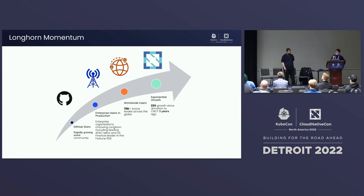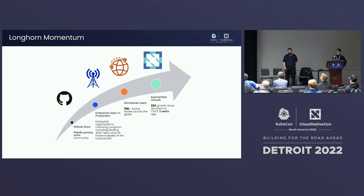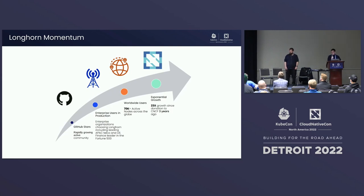Talking about community and momentum for Longhorn - it has a long history and has grown alongside Kubernetes growth. Enterprise usage is growing especially, and we have a kiosk here with feedback from users who have different usage scenarios, including some telecom users. We know that right now there are more than 17,000 nodes running Longhorn already and the number keeps growing.